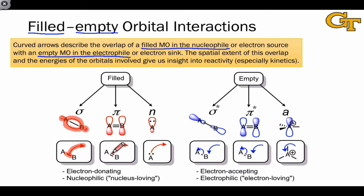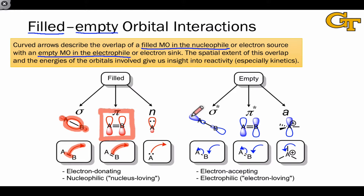Likewise, when you see an arrow starting at a double or triple bond, you know that's associated with a pi electron source. And once again, we can draw a molecular orbital that contains those donated electrons just from our general understanding of what a pi orbital looks like. The two lobes should really be connected into a hotdog-type shape rather than two separate lobes, as shown here.